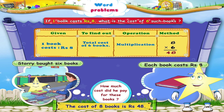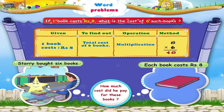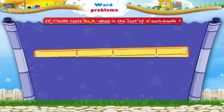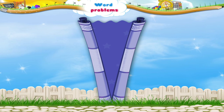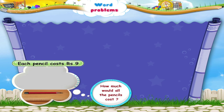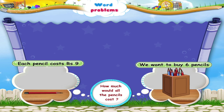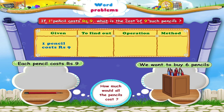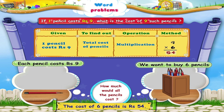Now, let us calculate the amount we paid for the pencils. We were told that the cost of each pencil was rupees 9, and we wanted to buy 6 pencils. The word problem is: if one pencil costs rupees 9, what is the cost of 6 such pencils? Since we have to find the total cost, we again use multiplication. We multiply the cost of each pencil, rupees 9, by the total number of pencils, which is 6. The cost of 6 pencils is rupees 54.